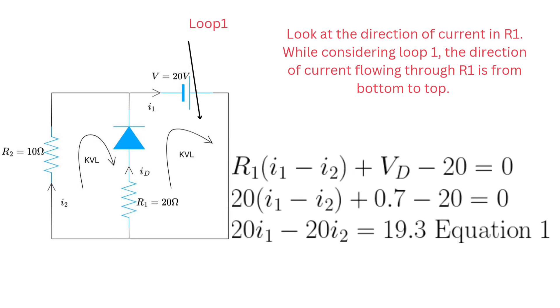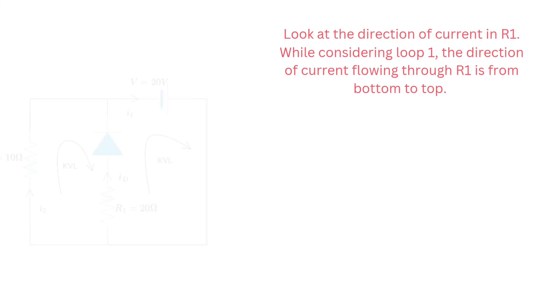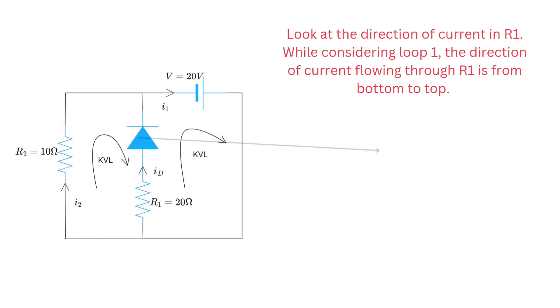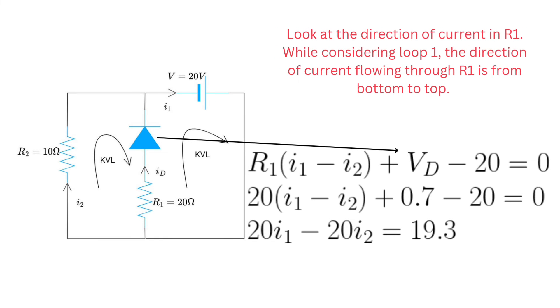And this is KVL equation for loop one and we get equation one from this loop. Similarly, this is R1 into I1 minus I2. Similarly, one diode drop.